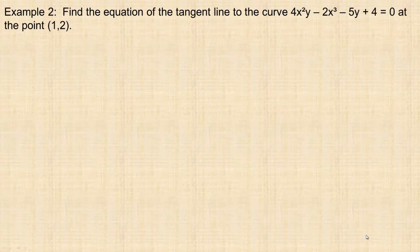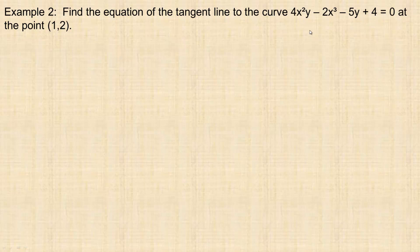Example 2: we've got this curve, which has terms with both x's and y's. I'm going to use implicit differentiation to find the derivative. This one I actually could isolate for y because there are the same power of y in both terms, but this is about implicit differentiation, so that's why I'm using it here. We're asked to find the equation of the tangent line at a given point.